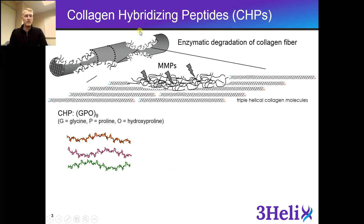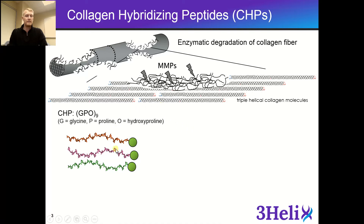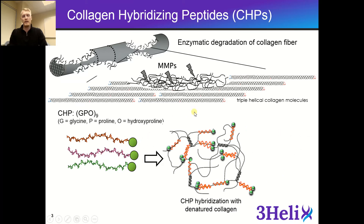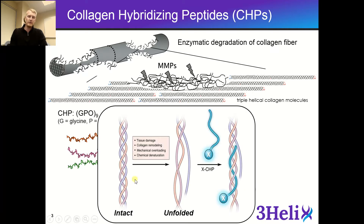Once the collagen fiber gets degraded by enzymes such as MMPs, it exposes all these single-stranded collagen fibers that we can now target. What we did is we attached fluorescent molecules and biotin onto our short CHP sequences, and it allows us to stain, image, or locate places where there is high amounts of collagen degradation or collagen remodeling. Here we have a single CHP hybridizing with two strands of collagen, and here we have two CHPs hybridizing with one strand of collagen.